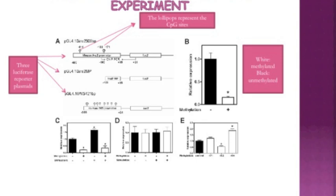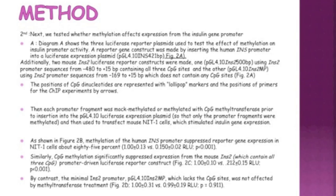Next, we tested whether methylation affects expression from the insulin gene promoter. Diagram A shows the three luciferase reporter plasmids used to test the effect of methylation on insulin promoter activity. A reporter gene construct was made by inserting the human insulin promoter into an expression plasmid. Additionally, two mouse insulin luciferase reporter constructs were made: one using the insulin promoter sequence from minus 480 bp to plus 15 bp containing all CpG sites, and the other using the insulin promoter from minus 169 to plus 15 bp, which does not contain any CpG sites. The positions of the CpG dinucleotides are represented with lollipop markers.